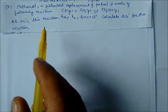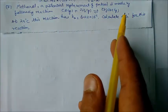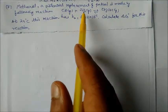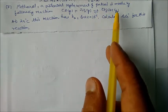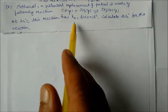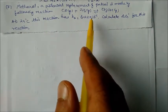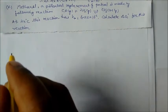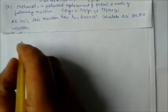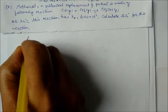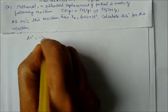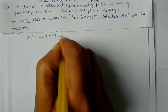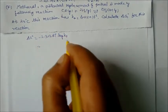Next problem: methanol, a potential replacement for petrol, is made by CO₂ + H₂ + H₂O → methanol at high temperature and pressure. Kp = 6.25 × 10⁻³ at 25°C. Calculate ΔG° for this reaction.